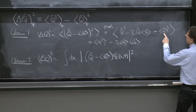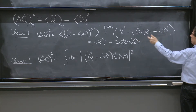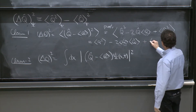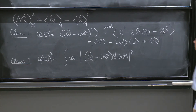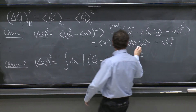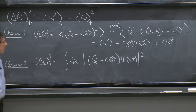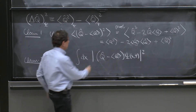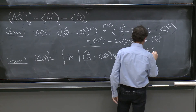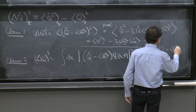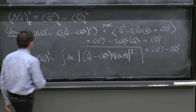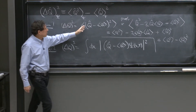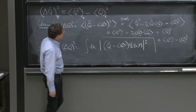The expectation value of a number is just that number, because you're left with the integral of ψ* ψ, which equals 1. So here is plus ⟨Q⟩². The second and third terms are actually the same — they are both equal to ⟨Q⟩² — they cancel partially, and you're left with the expectation value of Q̂ squared minus the expectation value of Q, squared. So Claim 1 is true, and in particular it shows that ΔQ² — being the expectation value of a square — is positive.